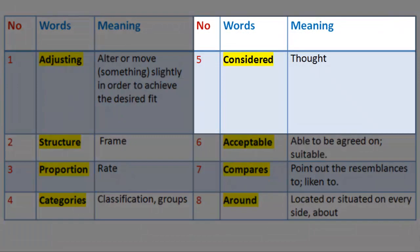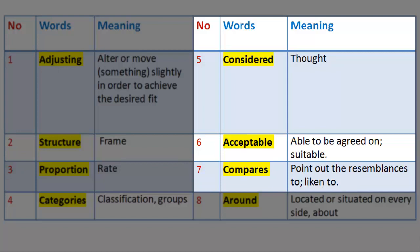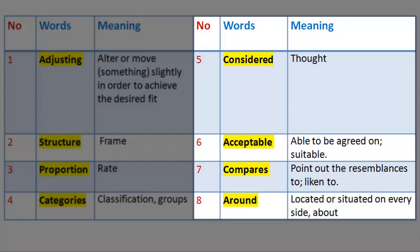Number 5. Word: Considered. Meaning: Thought. Number 6. Word: Acceptable. Meaning: Able to be agreed on, suitable. Number 7. Word: Compares. Meaning: Point out the resemblances to, liken to. Number 8. Word: Around. Meaning: Located or situated on every side, about.